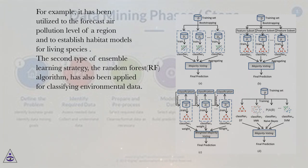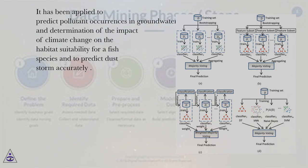The second type of ensemble learning strategy, the Random Forest (RF) algorithm, has also been applied for classifying environmental data. It has been applied to predict pollutant occurrences in groundwater, determination of the impact of climate change on habitat suitability for a fish species, and to predict a storm accurately.